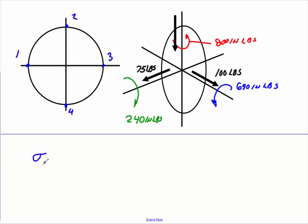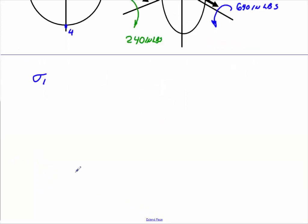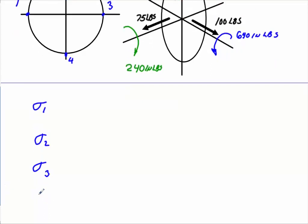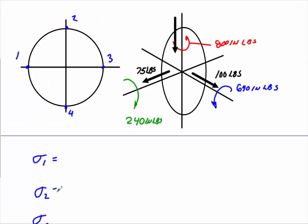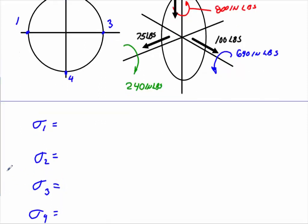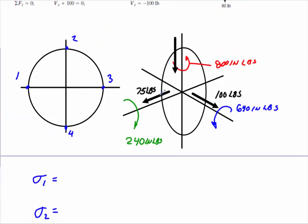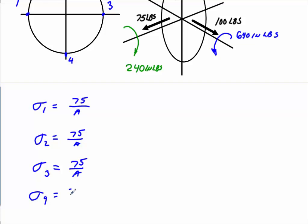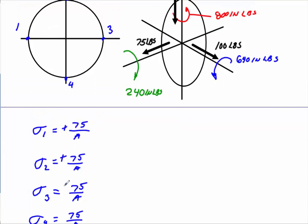I'm going to write these all down. If I'm going to find what the normal stress is going to be at 1, what the normal stress is going to be at 2, what the normal stress is going to be at 3, and what the normal stress is going to be at 4 — we're going to work through each one carefully. In each one of these positions you have the 75 coming in. In each one of these you're going to have 75 divided by that cross-sectional area, and you're going to make that positive no matter where the position is.